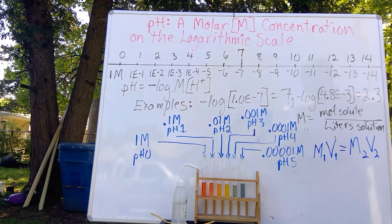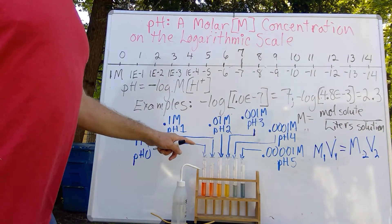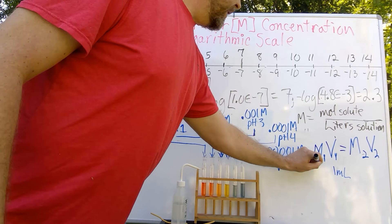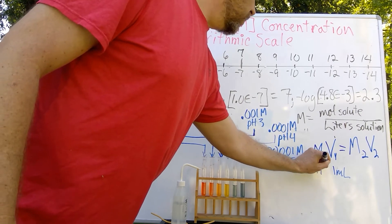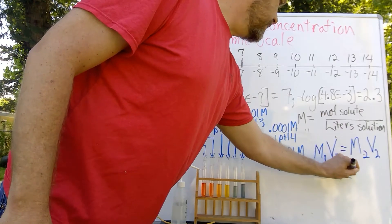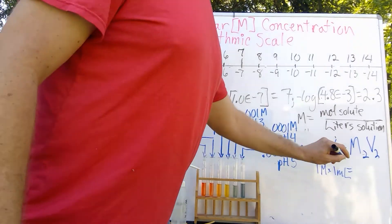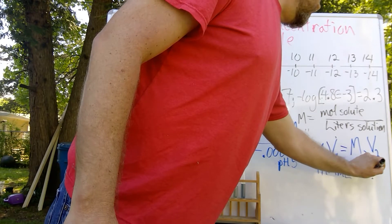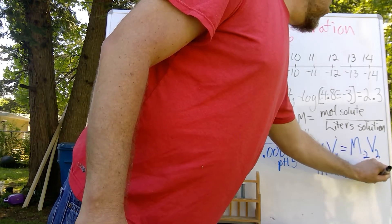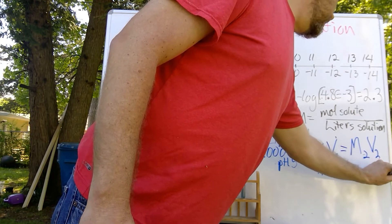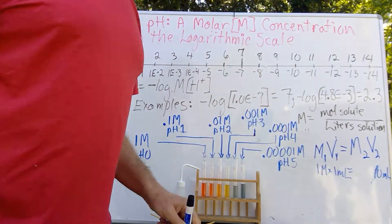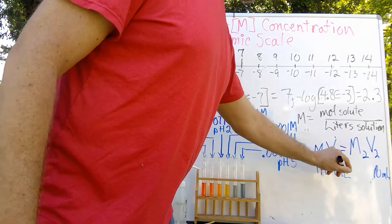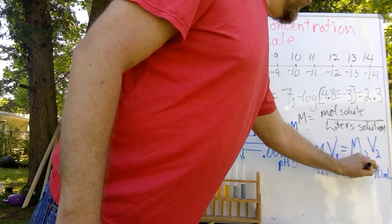So what I was doing, I was taking 1 milliliter from a 1 molar concentration and if I were to put that into a solution that was otherwise diluted down with water to 10 milliliters, thus 9 milliliters of water and 1 milliliter of our acid,